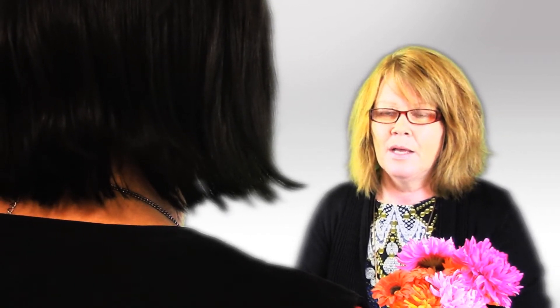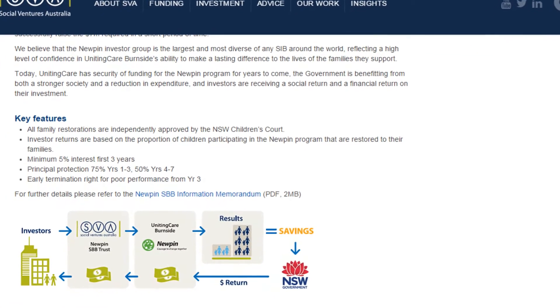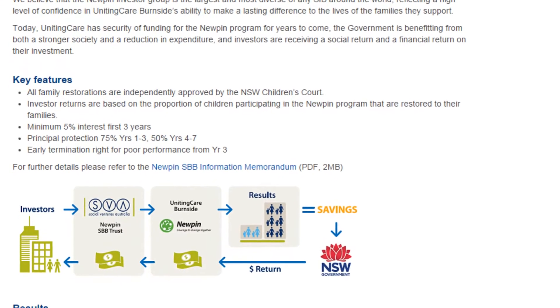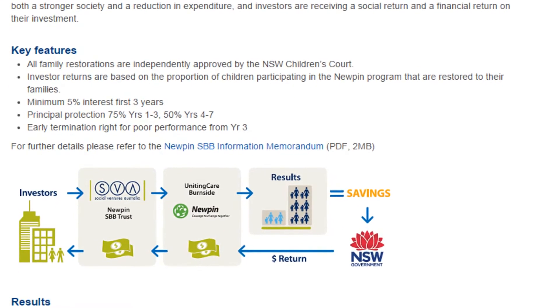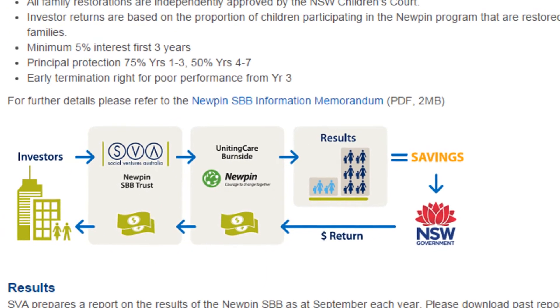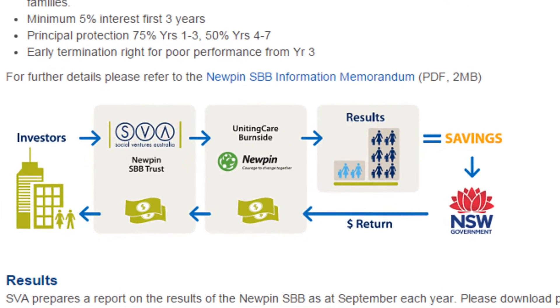Social impact bonds can be quite complex to understand. So here is an example of a social impact bond project that is already up and running called NewPIN. The NewPIN project is a $7 million social impact bond project. It's all about keeping children out of foster care. The idea is that if through an intervention by a community service organisation the number of children in foster care can be reduced, government will be very interested in paying a dividend to the investor because of the savings they've incurred through a reduction in pressure on the foster care system.